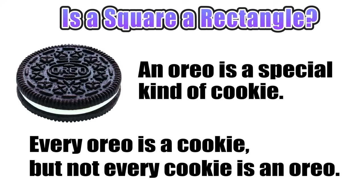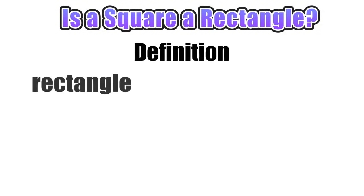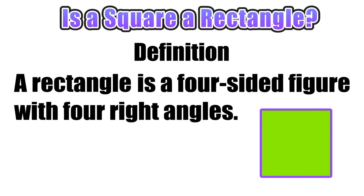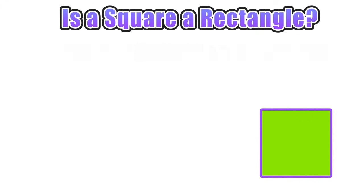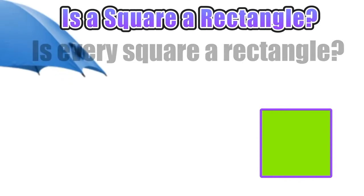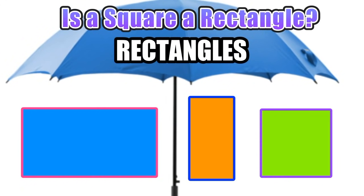Is a square a rectangle? Let's start with the definition of a rectangle, which is a four-sided figure with four right angles. We want to see if a square will satisfy this definition and answer the question: is every square a rectangle? We can easily draw four-sided figures with four right angles that would be considered rectangles and satisfy our definition.